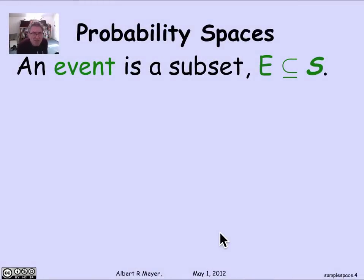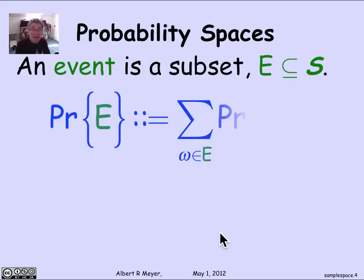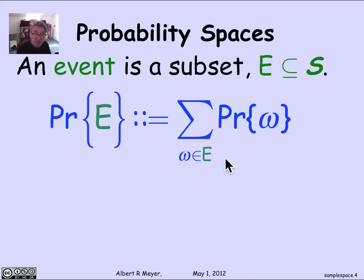The other key concept we saw already is the idea of an event. An event formally is nothing but a subset of the sample space — some set of outcomes. Presumably the event is something you're interested in, like winning. The definition of the probability of an event is simply the sum of the probabilities of all the outcomes in the event.